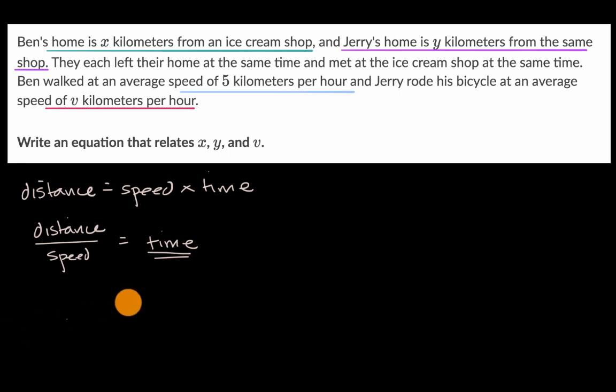So Ben's distance divided by Ben's speed should be the same as Jerry's distance divided by Jerry's speed. So let me write that down. Ben's distance divided by Ben's speed.